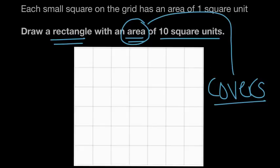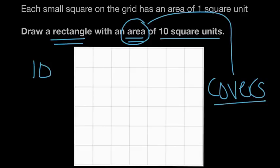We can't do one long column either, because there are only six square units going down, so we can't draw a rectangle going down like that. That means we're going to have to break up our 10 into equal groups. Since it can't all fit on one row, we're going to have to break up the unit squares into groups.